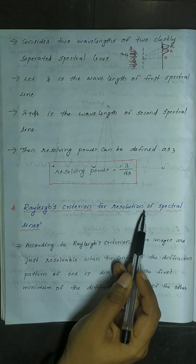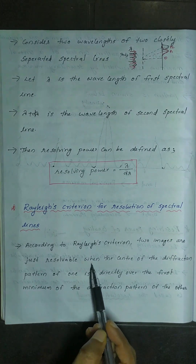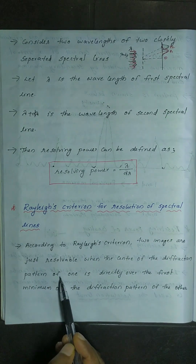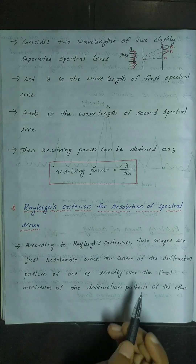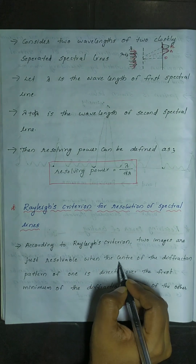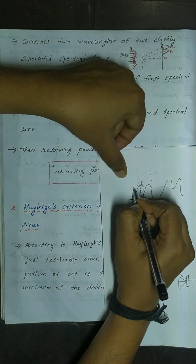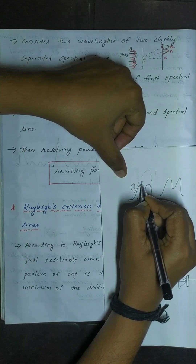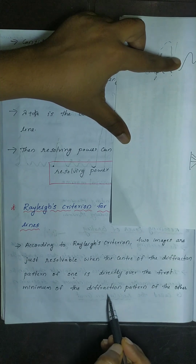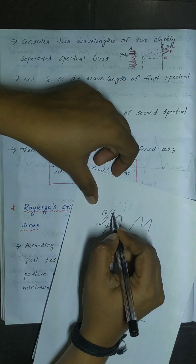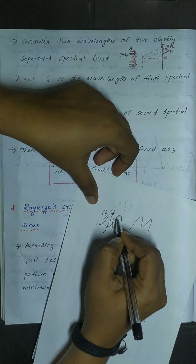According to Rayleigh's criterion, two images are just resolvable when the center of the diffraction pattern of one is directly over the first minimum of the diffraction pattern of the other. That is, the principal maxima of one should be directly over the secondary minima of the other wave.